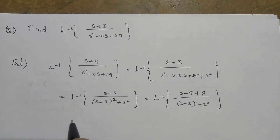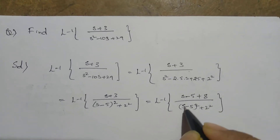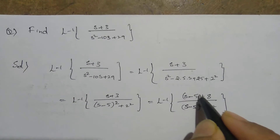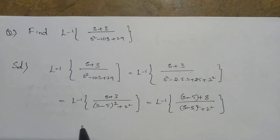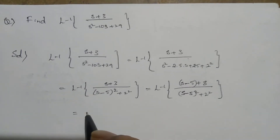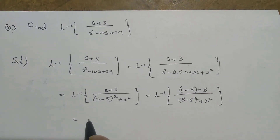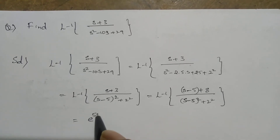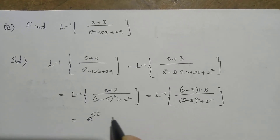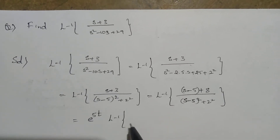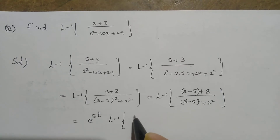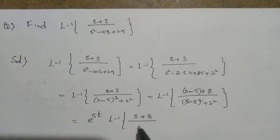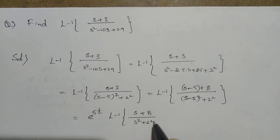Now you can easily write this. Wherever s is there, s minus 5 is there, so I can write by using the shifting theorem: e to the power of 5t into L inverse of (s plus 8) divided by (s squared plus 2 squared).